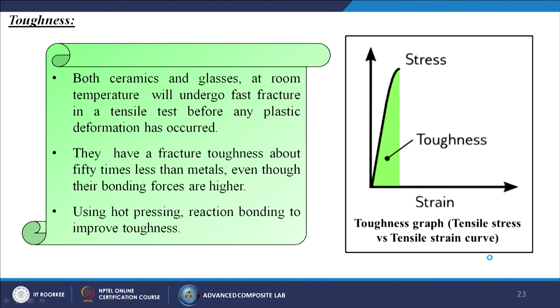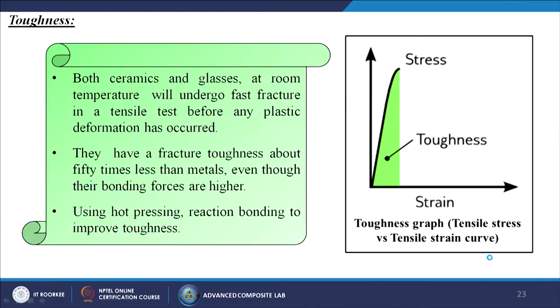Both ceramics and glasses at room temperature undergo brittle fracture before any plastic deformation under tensile strain. They have a fracture toughness about 50 times lesser than metals, even though their bonding forces are higher. Hot pressing and reaction bonding can be used to improve toughness.